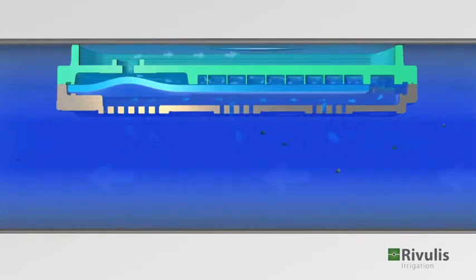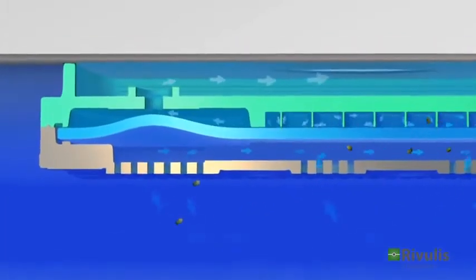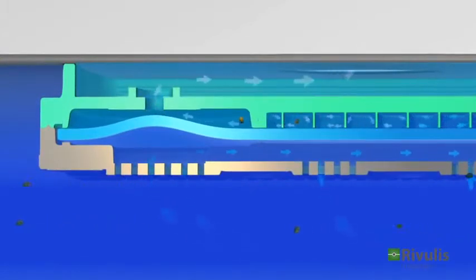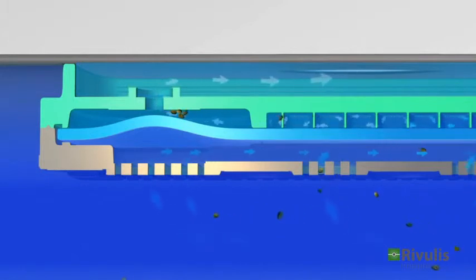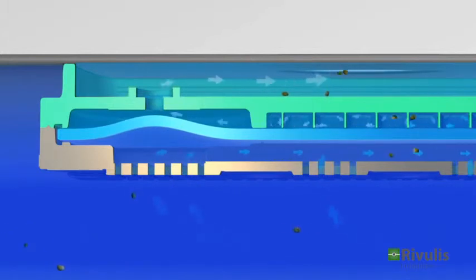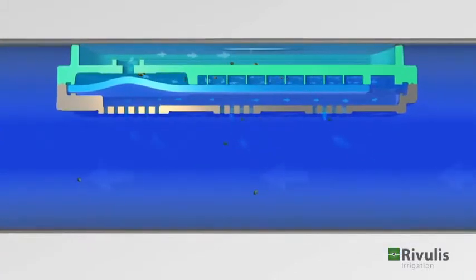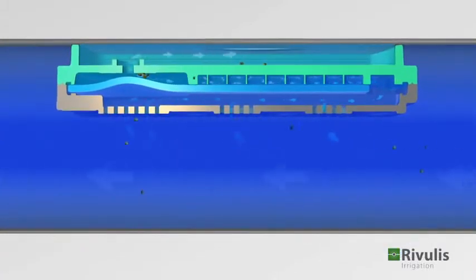This can affect the flow rate, which in turn influences the forces operating on the membrane. When the forces on the upper side of the membrane build up, they push the membrane down, allowing the particles to be discharged. Once the particles are flushed out, the dripper will revert to its predetermined flow rate.